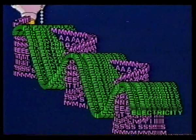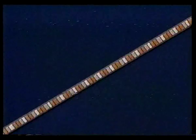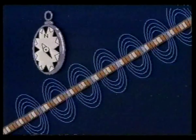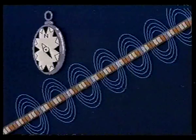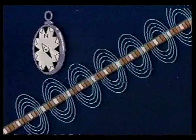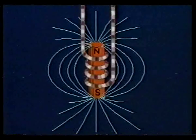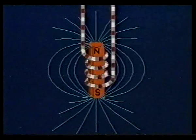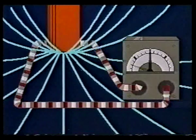Just what knowledge did Maxwell have to work with? It was known that when electricity flows through a wire, it creates a magnetic field around the wire. When the rate of flow changes, the strength of the magnetic field changes too. Maxwell was also aware of a closely related phenomenon: if a magnetic field changes in strength, an electric field is produced, which will cause a charge to flow through the conductor.